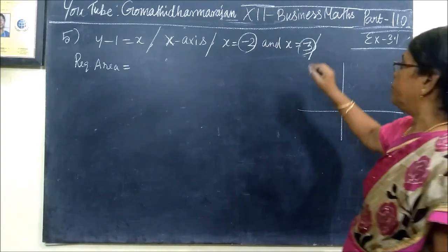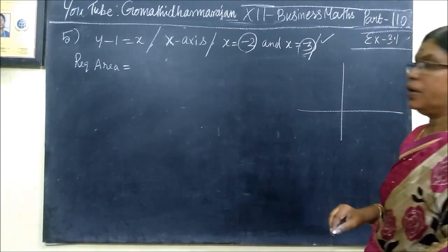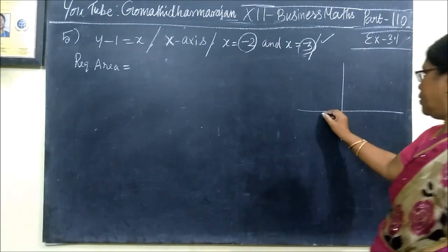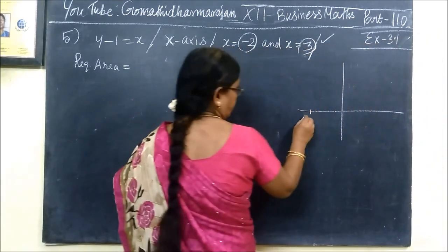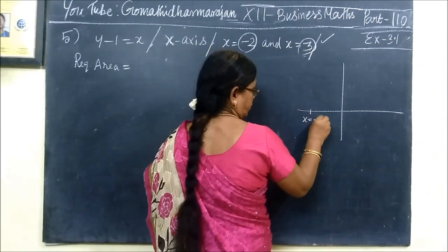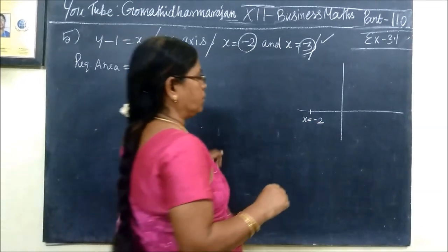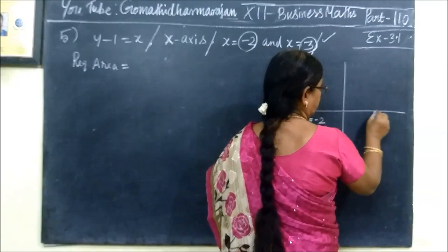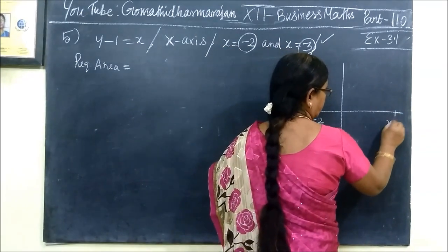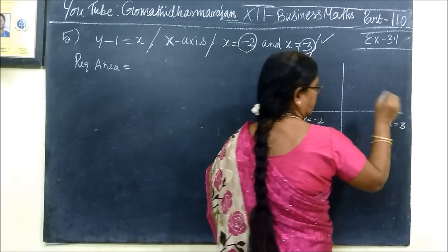First, x equal to minus 2 is the limit when the first is written. In the limit, x equal to minus 2, then minus 1 is minus 2. So x equals minus 2. Then x equals 3. x equals 3 is 1 and 2 is 3. So this is x equals 3.